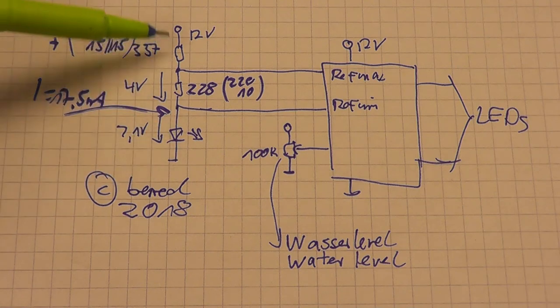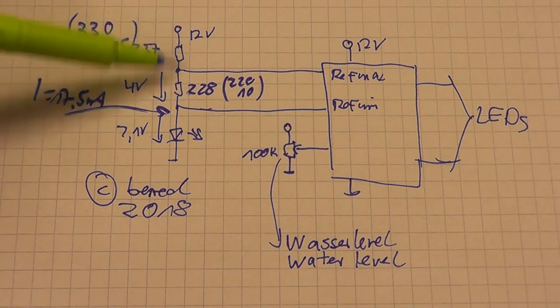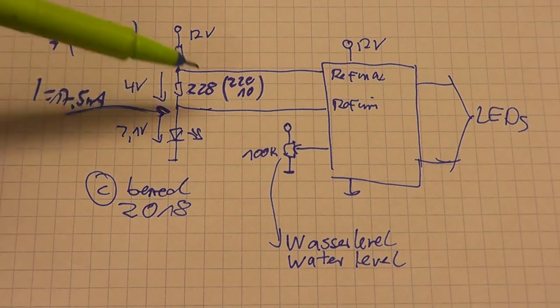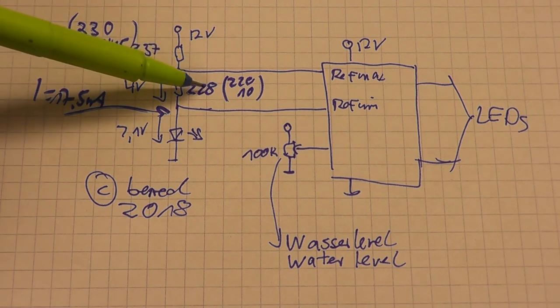With this information and 12 volts, I can calculate both resistances here. For the upper reference, I need a difference of 4 volts, so I took a 228 ohm resistor.